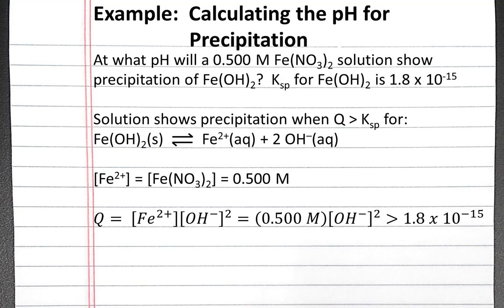Our expression for Q is the concentration of iron 2 plus times the concentration of hydroxide ions squared, and this Q has to be greater than Ksp, which is 1.8 times 10 to the negative 15th.